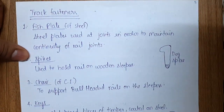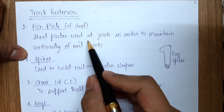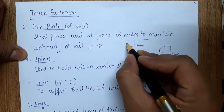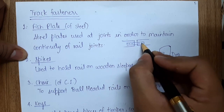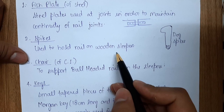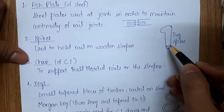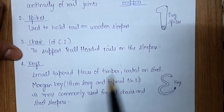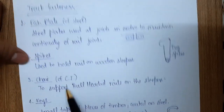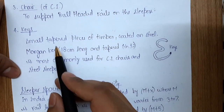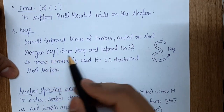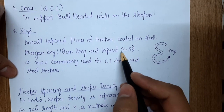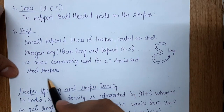Now we will see some track fasteners. Fish plates of steel are used to join rails and maintain continuity at the rail joint — they connect two rails together. Spikes are used to hold the rail on wooden sleepers. Dog spikes are a common shape. Chairs are used to support bull headed rails on sleepers and are made of cast iron, while fish plates are made of steel. Keys are small tapered pieces of timber coated in steel — the Morgan key is 18 cm long and tapered 1 in 32. Keys are commonly used for cast iron chairs and steel sleepers to hold the rail in position and maintain gauge distance.